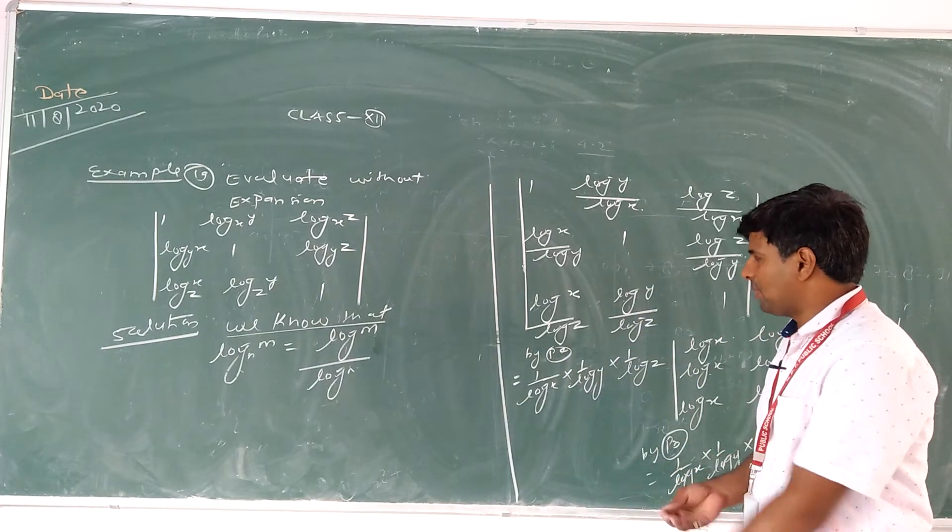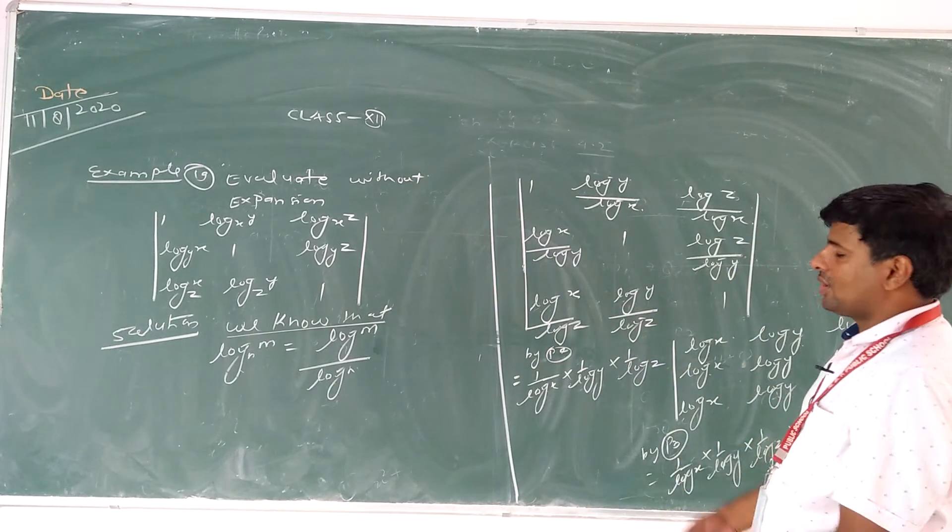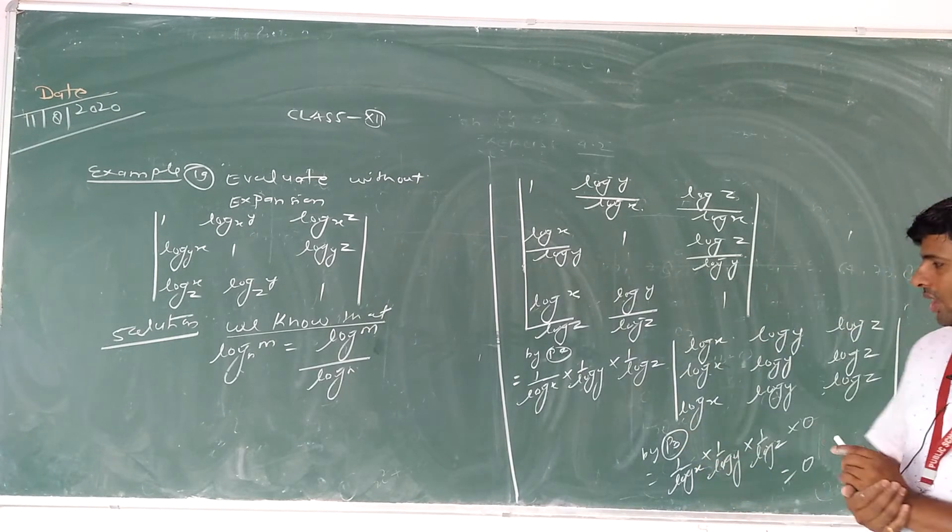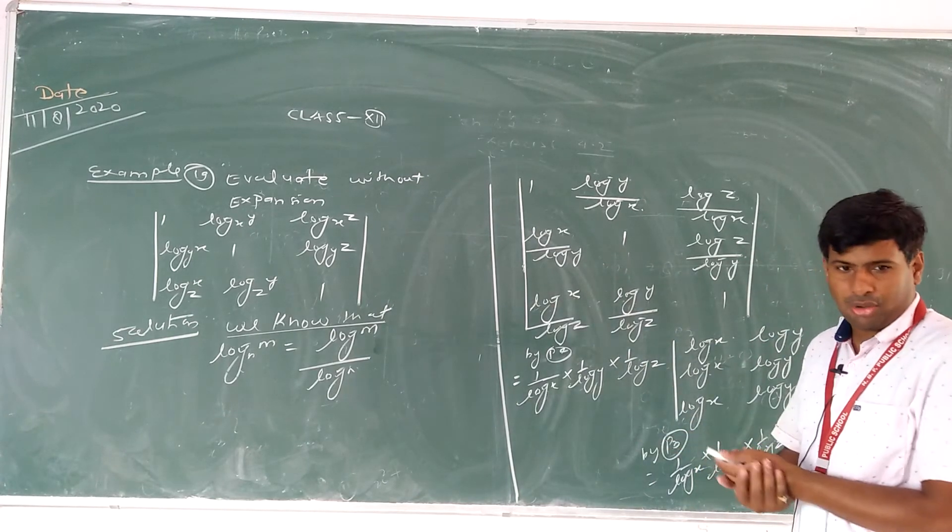By using property P4, we can take from first row, 1 by log x is common. From second row, 1 by log y is common. And third row, 1 by log z is common.